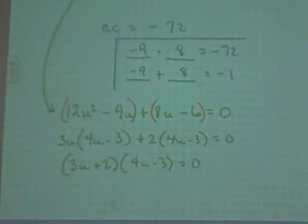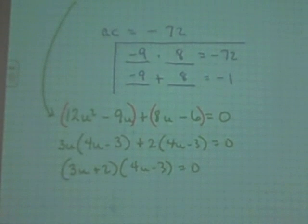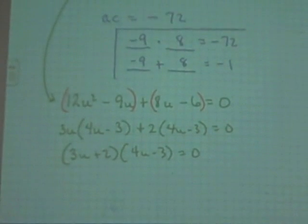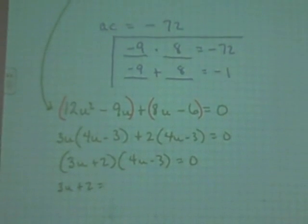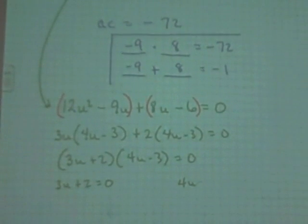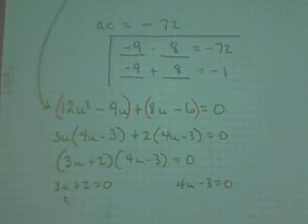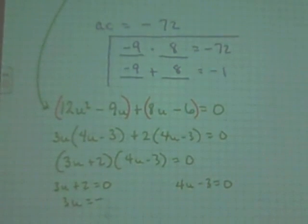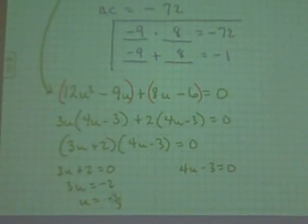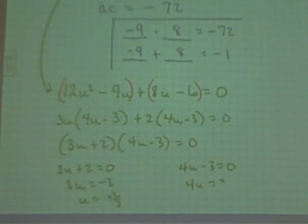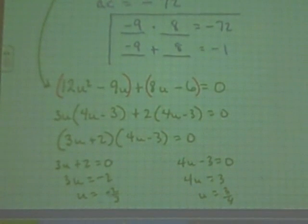Now I'm going to factor an equation like that. What do I do next? Set them equal to zero. Set them equal to zero and solve. So when I solve this, I'm going to get three U equals negative two. U equals negative two thirds. And over here, four U equals three. U equals three fourths. With me?